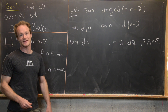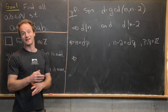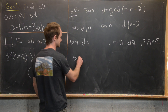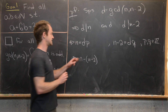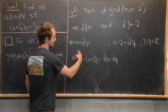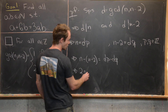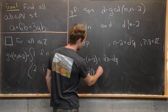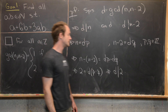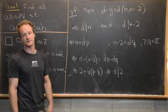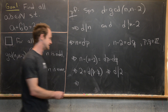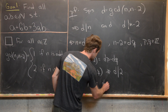The next thing we want to do is subtract these two equations from each other to get 2 isolated. We have n minus (n minus 2), which equals DP minus DQ. Simplifying the left-hand side gives us 2 equals D times the quantity P minus Q. Reading this off, we see that D divides 2. In other words, the greatest common divisor of these two numbers must divide 2. But since 2 is prime, that only gives us two possibilities: D equals 1 or D equals 2.